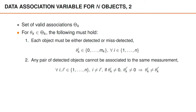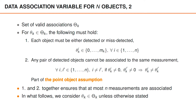In other words, two detected objects cannot be associated to the same measurement. In object tracking, this is part of the point object assumption. The point object assumption states that each measurement originates from a single source — either from one object or from clutter — and that each object can cause at most one detection in each timestep. Together, these two requirements ensure that at most n measurements are associated to the n objects. Going forward, we will only consider valid associations unless explicitly stated otherwise.